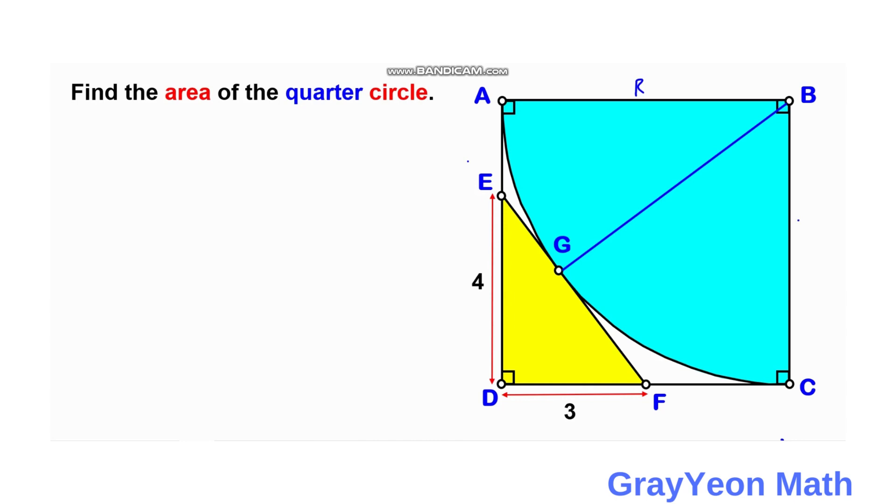We can label the radius as R. So if that is R, this is R also, and this is R also, the segment GB. And if this AD is also R, then this length AE is actually R minus 4 because ED is 4. And on this segment FC, since DF is 3, this FC is actually equal to R minus 3.